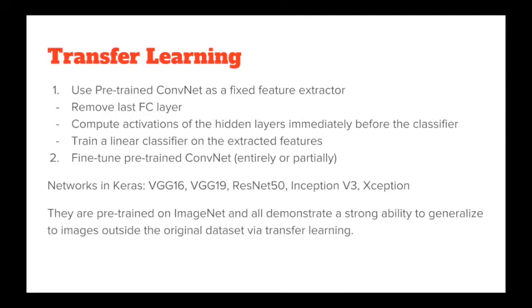Our second method is using the transfer learning technique. Transfer learning is another way to make use of the power of deep convolutional neural networks. It is particularly useful when the dataset is not large enough. Instead of training a network from scratch, one can employ a convolutional network pre-trained on a very large dataset as an initialization or a fixed feature extractor. The simplest way is to replace the last fully connected layer with a new linear classifier such as a support vector machine or softmax. One can also extract features from an intermediate layer, as convolutional network features are more generic in early layers and more dataset-specific in later layers.